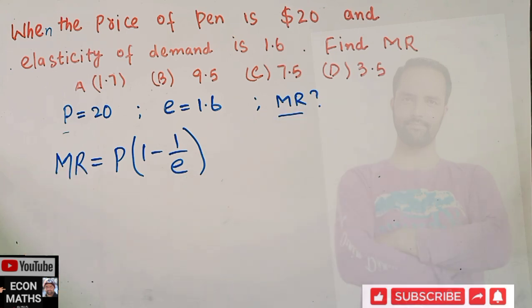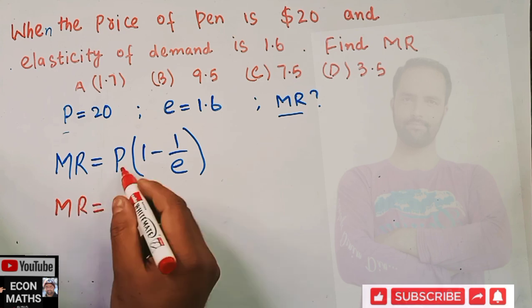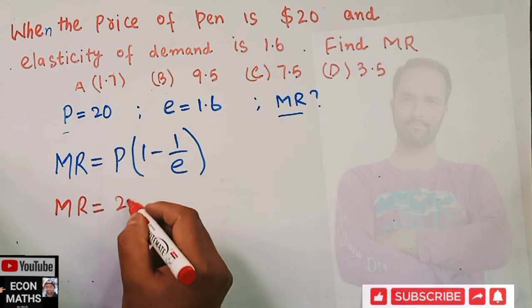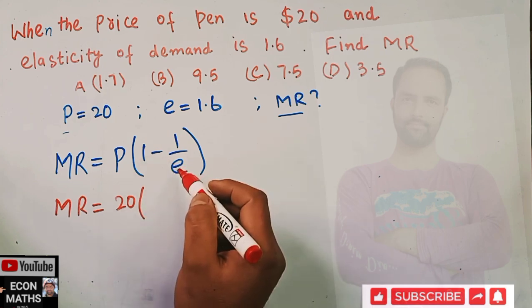So our marginal revenue is equal to... what is the price? Price is 20, so let me write it here: 20. We can write it like this: 1 minus 1 upon 1.6, where the value of e is 1.6.